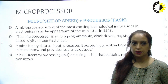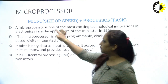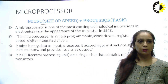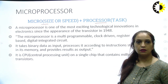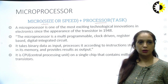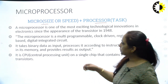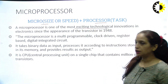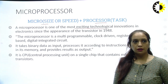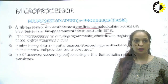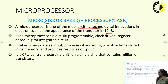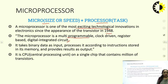What basically is a microprocessor? We can split the word into two parts: the first one is 'micro' and the second one is 'processor.' The micro word can be used for the size as well as for the speed, and the processor means a device which is able to perform a number of tasks. Microprocessor is one of the most exciting technological innovations in electronics since the appearance of the transistor in 1948. It is basically a digital IC which can be used for multiple programs — it is a clock-driven, register-based IC.